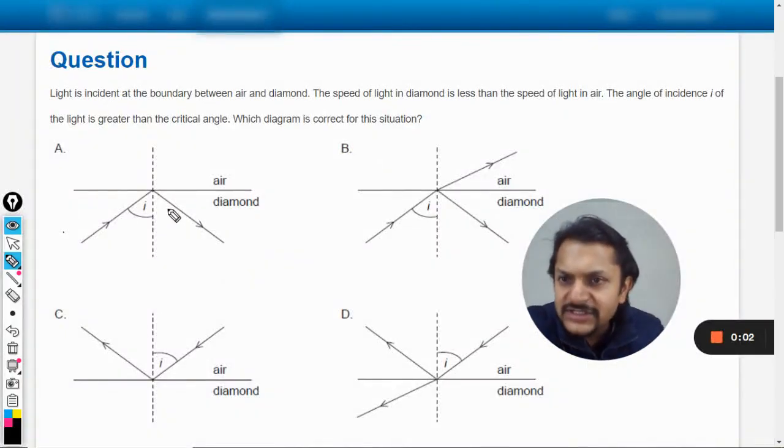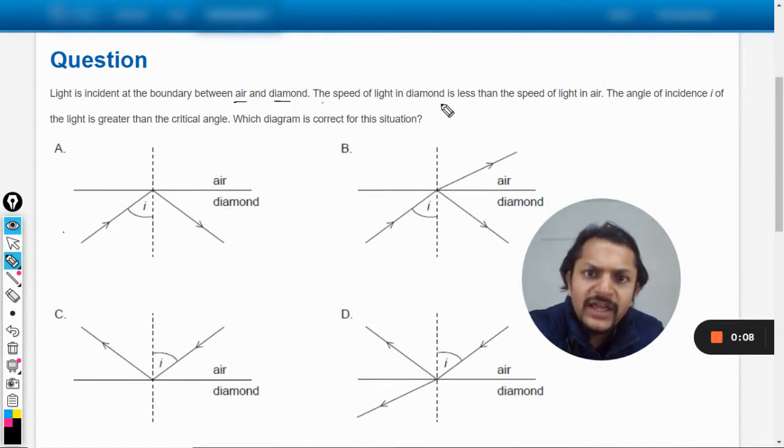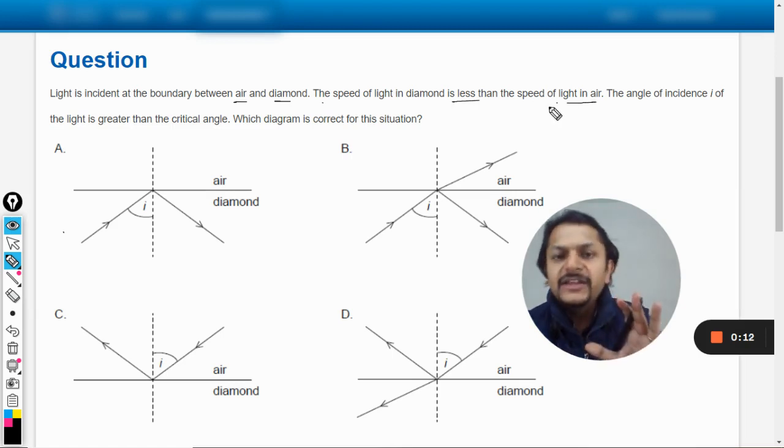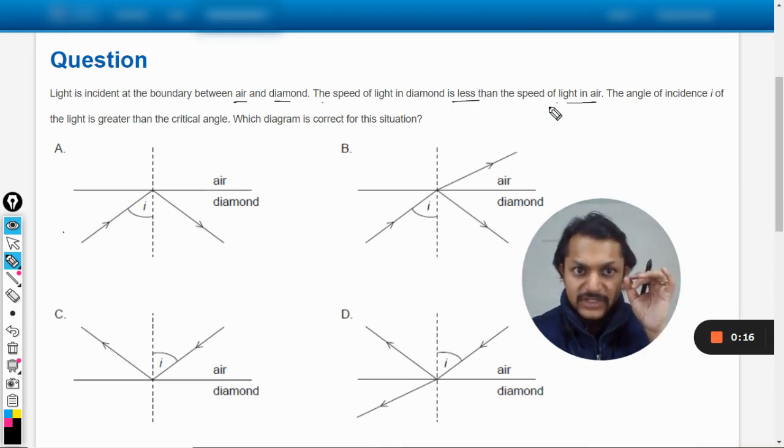Let us read this question, my dear students. Light is incident at the boundary between air and diamond. The speed of light in diamond is less than the speed of light in air. Definitely there is no new fact I would say. The speed of light is maximum in air, and wherever it goes like water, glass, diamond, carbon, or anything, if the light is traveling there it would be traveling with a lesser speed.